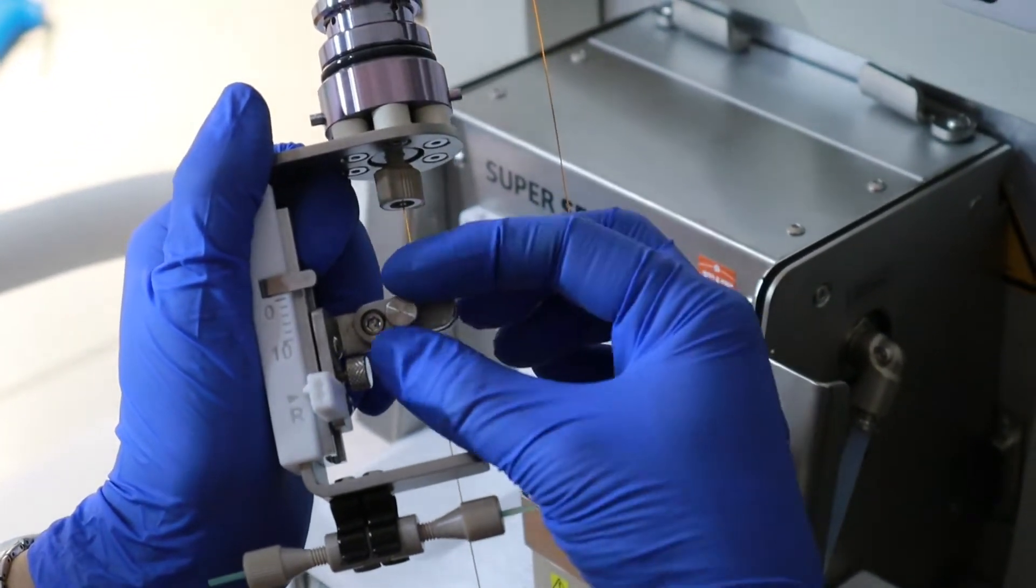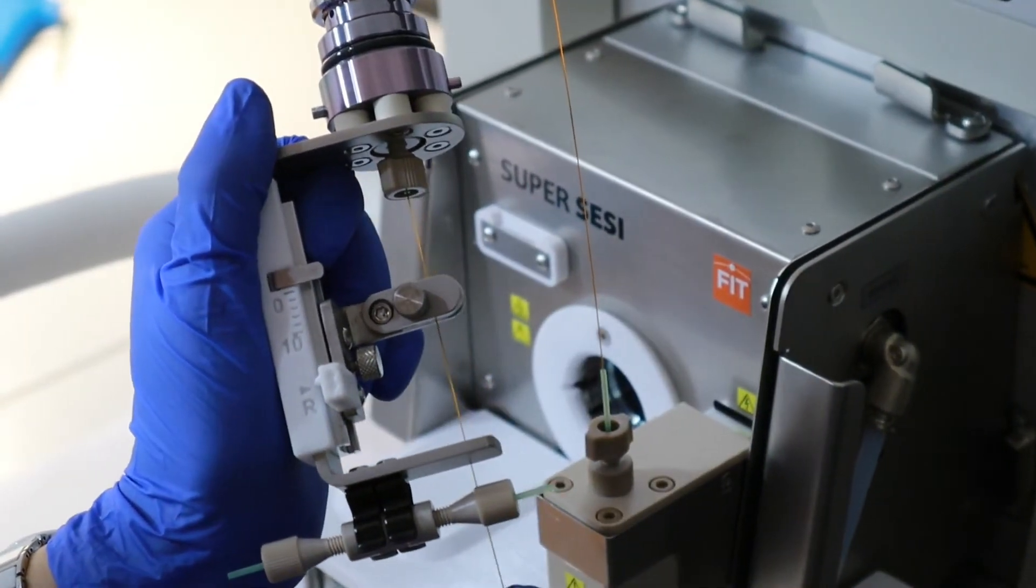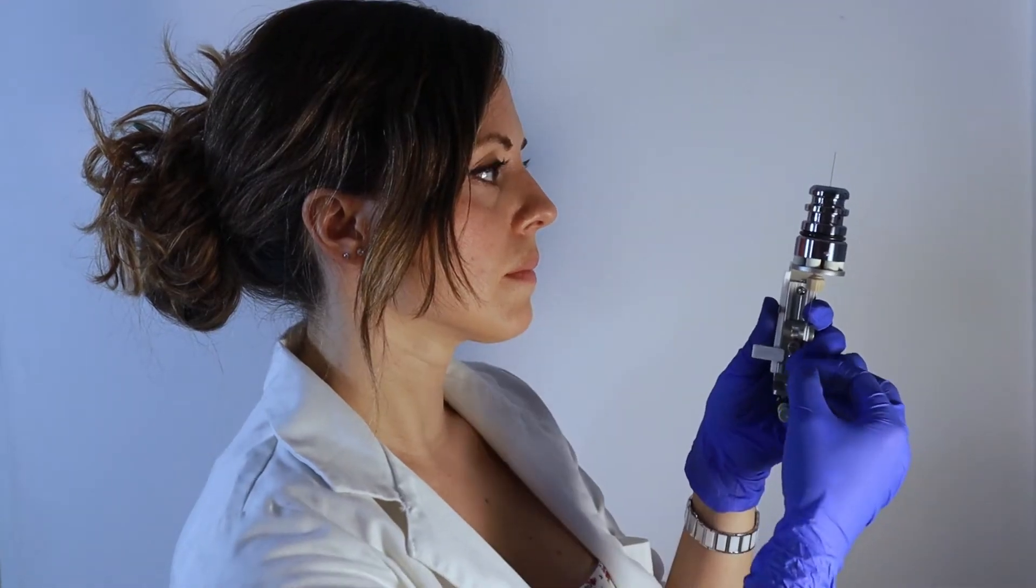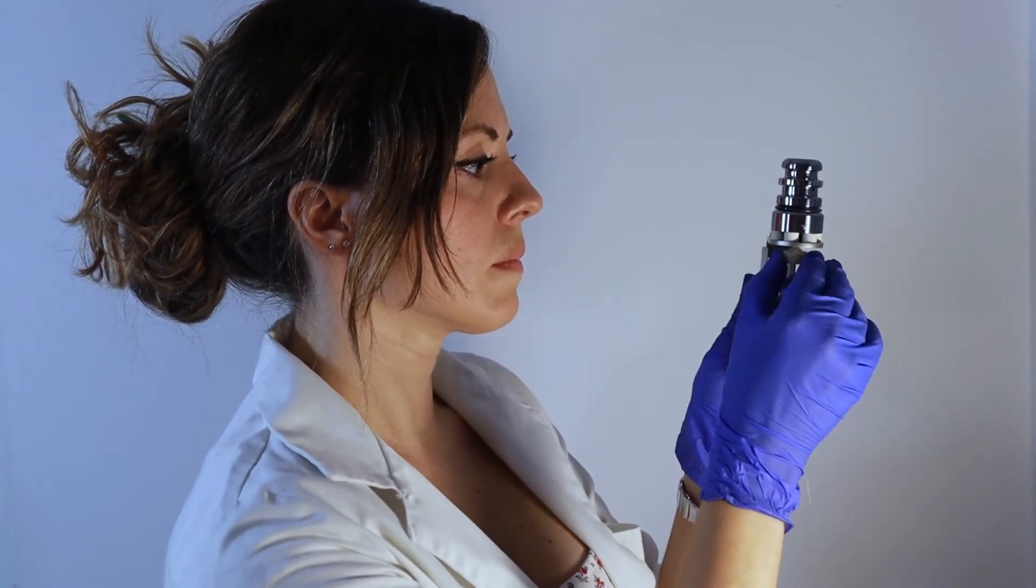Insert the emitter in the clamp from the side. Align the emitter with respect to the lateral orifice of the probe. Tighten the clamp.